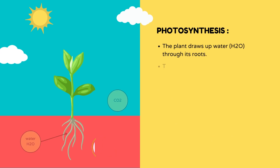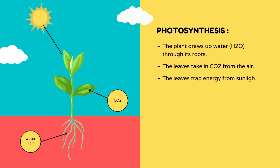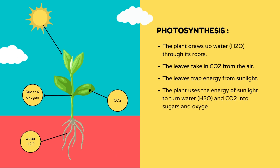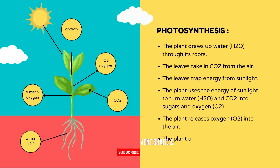The leaves take in CO2 from the air and trap energy from sunlight. The plant uses the energy of sunlight to turn water (H2O) and CO2 into sugars and oxygen (O2). The plant releases oxygen (O2) into the air and uses sugars for growth.